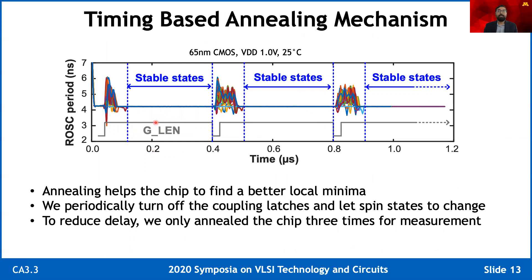When the global latch enable signal is off, the ring oscillators are free to move. After the system is frequency locked and ring oscillator periods are stable, if we turn off the latches, the ring oscillators would start to move around. If we keep them off for a short period of time, not all ring oscillators would change their states, but some will move away from their previous states. Hence, when they stabilize again, the system would move to a new local minima. We repeated this process to achieve better accuracy.